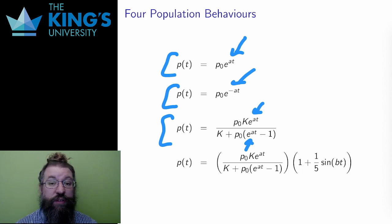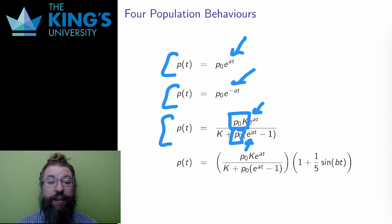The coefficient at the top is p0 times k, and the coefficient at the bottom is just p0. Dividing those, the limit as t goes to infinity is k. This population will level off to some value k.